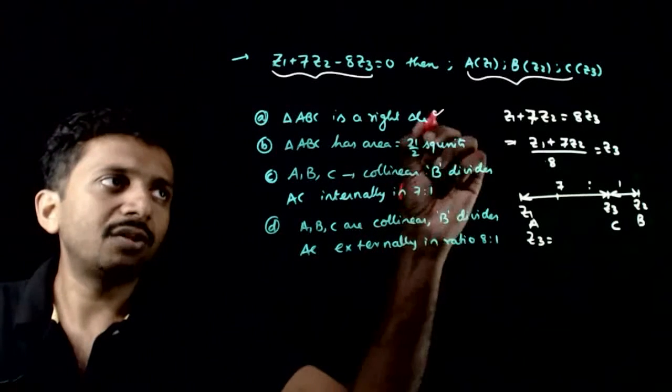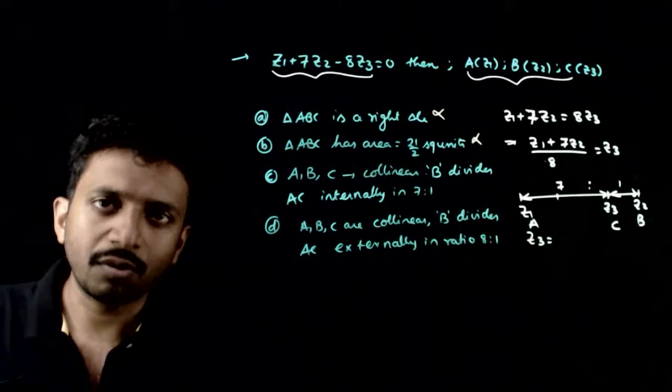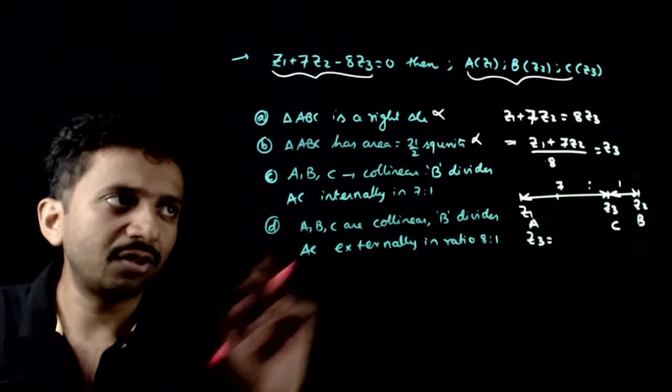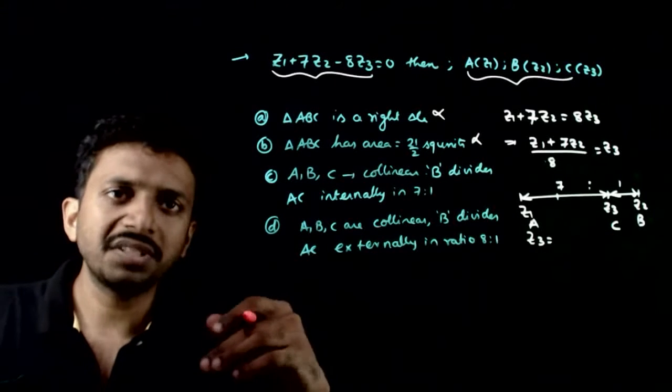But these two are collinear. Both ABC are collinear. Because C divides AB in the ratio 7 to 1, so AB is collinear.